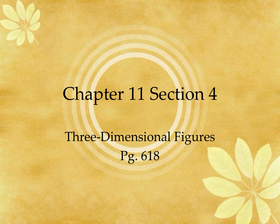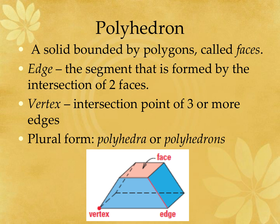Today we're going to cover chapter 11 section 4 and learn about three-dimensional figures. The first thing we're going to do is define what a polyhedron is. A polyhedron is a solid that is bounded by polygons called faces. We're going to identify the faces, edges, and vertices. The edges are the segment formed by the intersection of two faces, and a vertex is the intersection point of three or more edges.